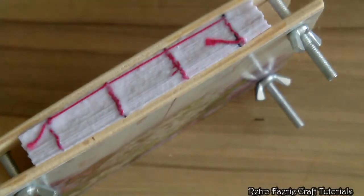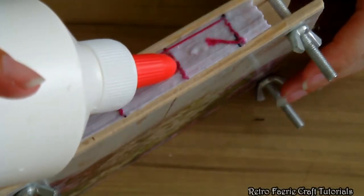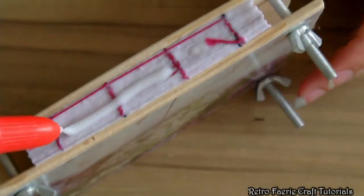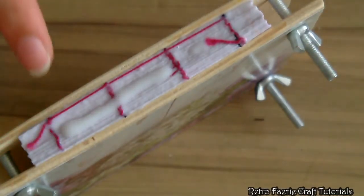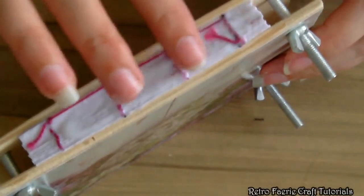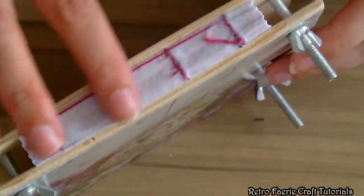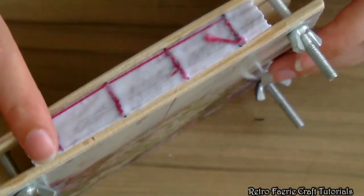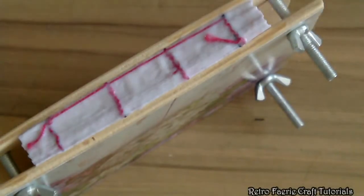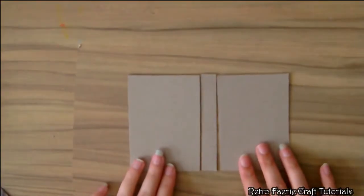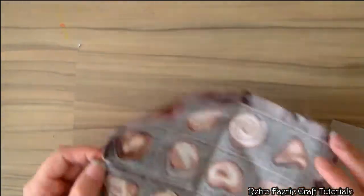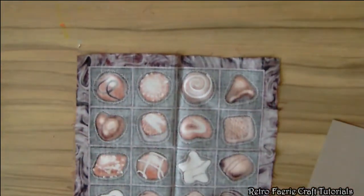You want to glue the edges of the spine part just to make it a bit tougher. I've put this inside a flower press but you can just use clips. I'm using PVA glue and leave that to dry. You want some card that's the same size as your booklet and the spine.